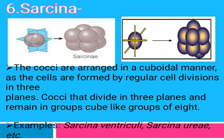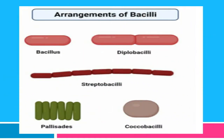The last arrangement of cocci is sarcina. In sarcina, the cocci cells again divide in three planes — X, Y, and Z — but here there is regular cell division. After regular division, a group of eight cells is produced that arrange themselves in a cube-like manner. Examples are Sarcina ventriculi and Sarcina urea. Remember: both sarcina and staphylococcus divide in three planes, but staphylococcus has irregular division while sarcina has regular division.